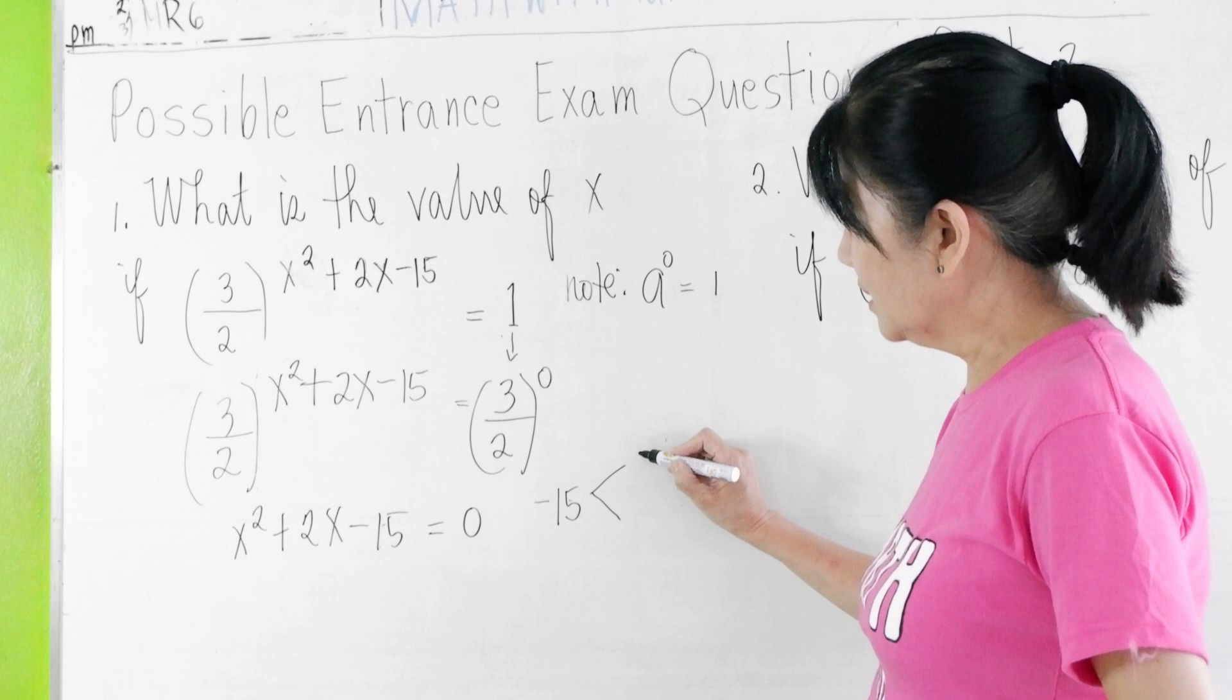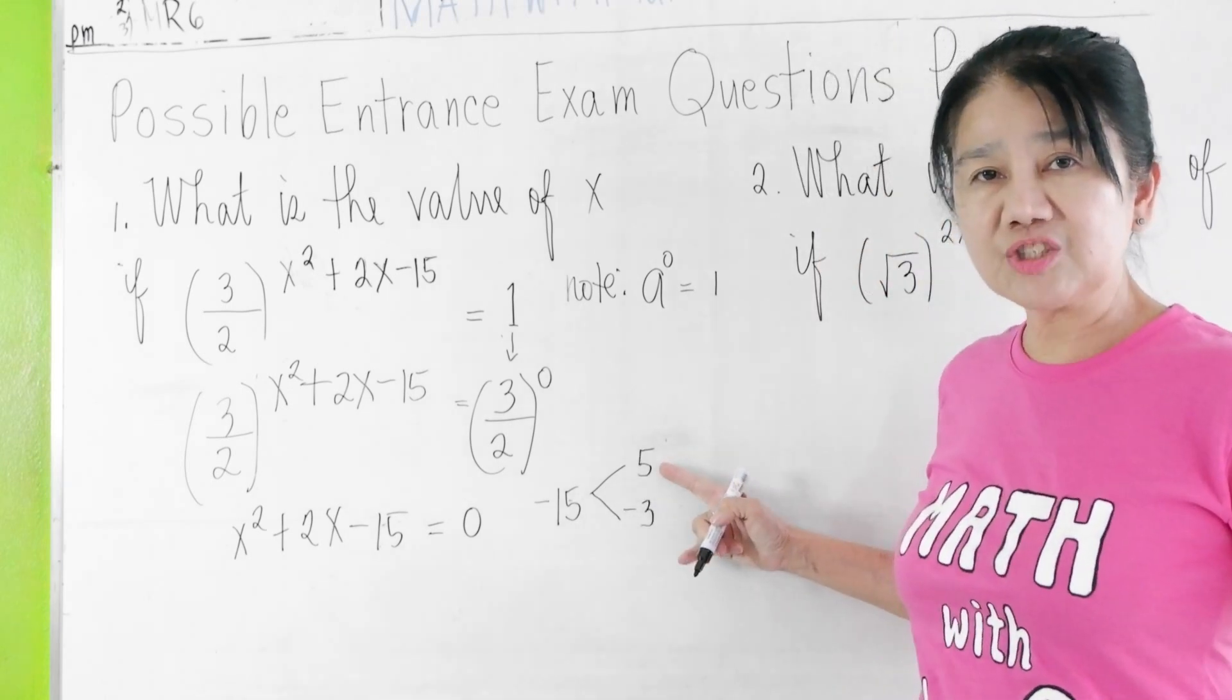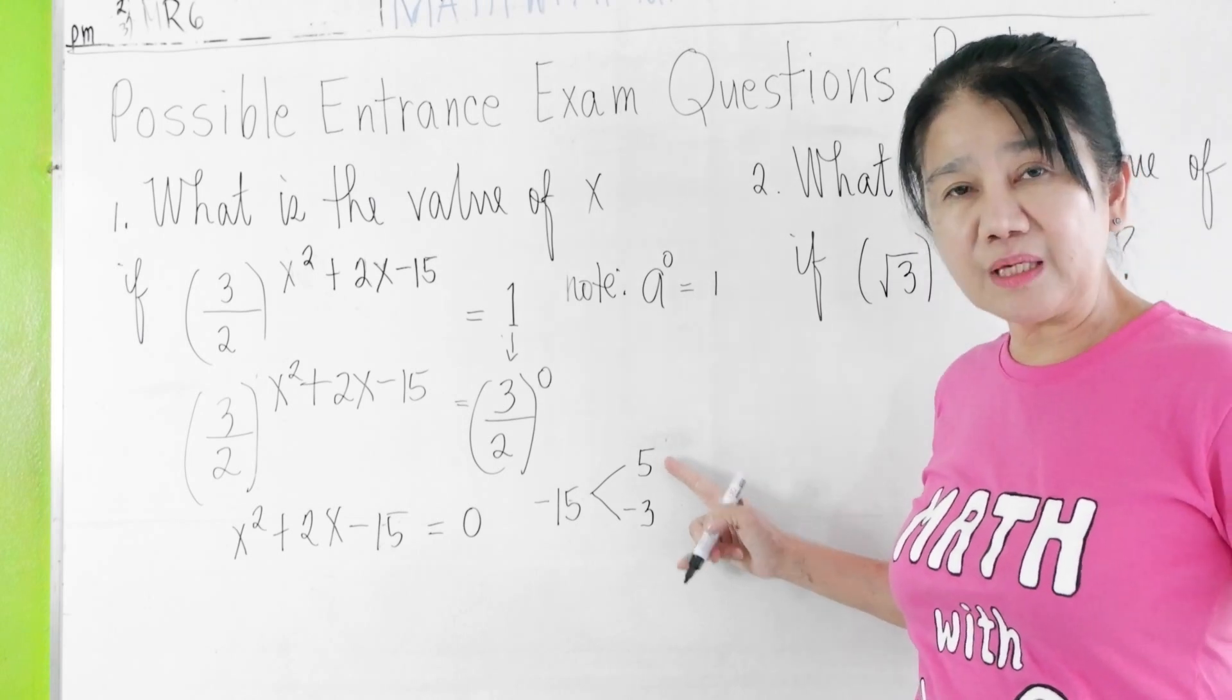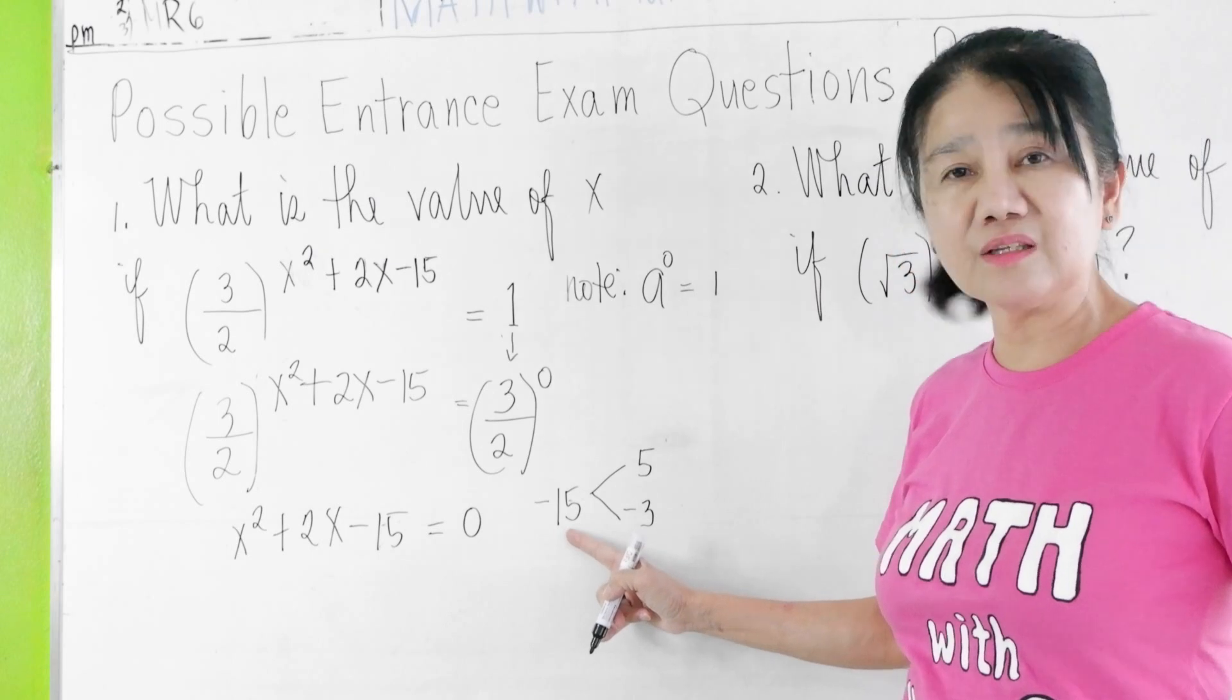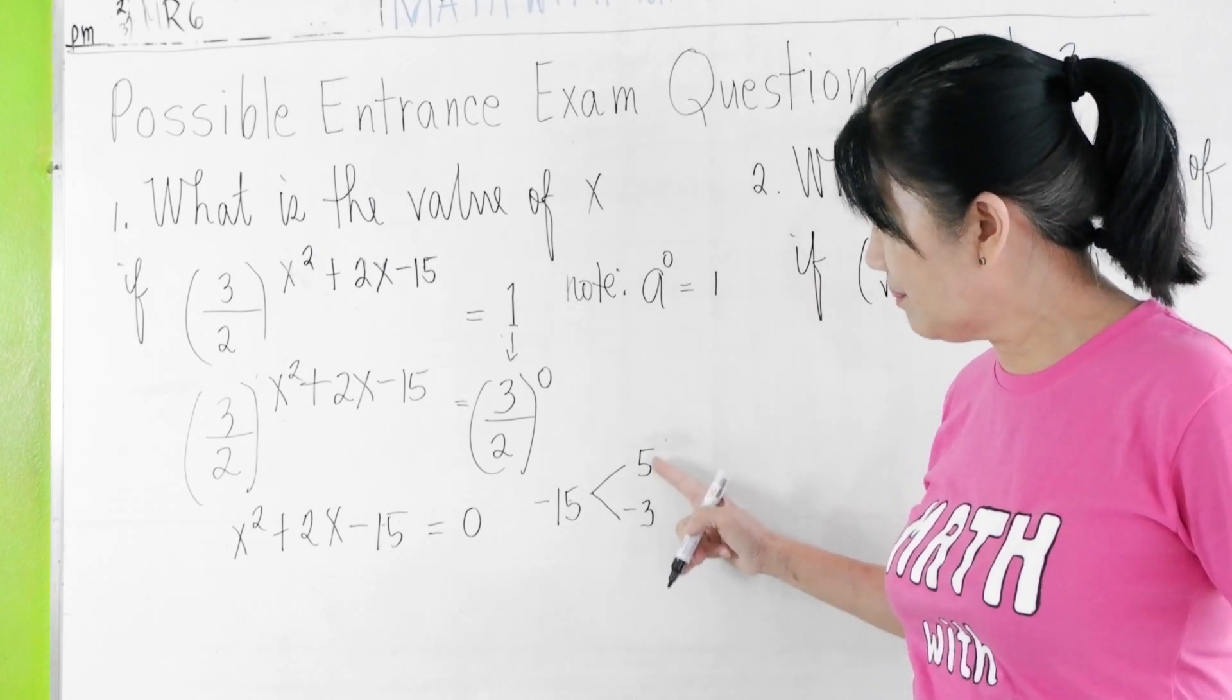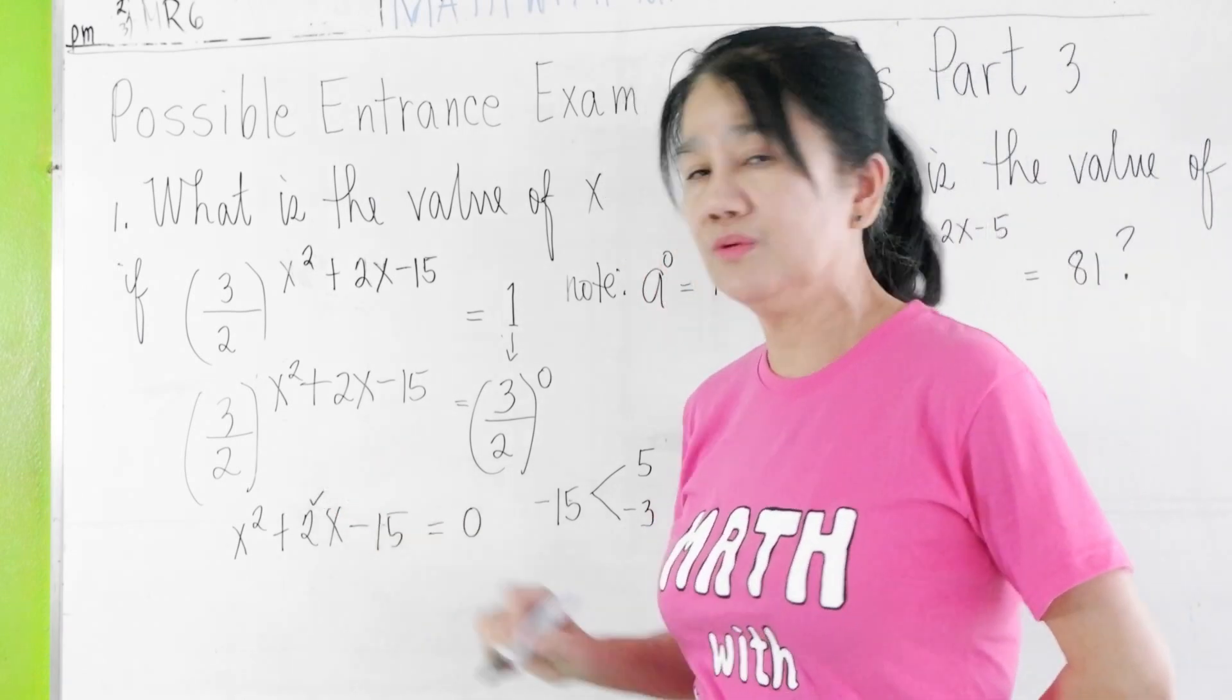So is it positive 5 times negative 3? Let's check. Positive 5 times negative 3, does that give us negative 15? Yes. When you add 5 plus negative 3, it gives us positive 2. Check.